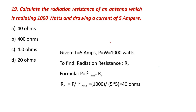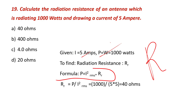Radiation resistance: the current does not take power. If the current is 5A, the radiation resistance can be calculated using the formula P = I²R. So R = P / I². With P = 1000 W and I = 5A: R = 1000 / (5×5) = 40 ohms. The answer is 40 ohms.